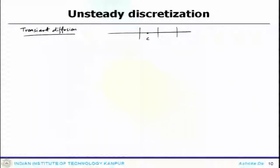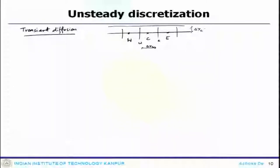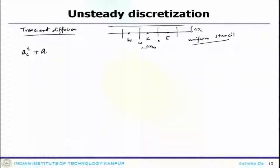So we have nodes C, E, and W, with faces small e and small w, and grid spacings delta x_C and delta y_C for a uniform stencil. Once you consider this uniform stencil, the discretized equation for the transient diffusion term is given by coefficient A_C and its neighboring coefficients.